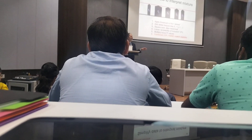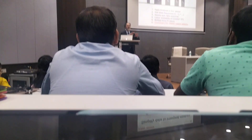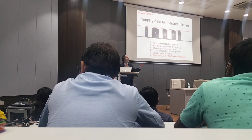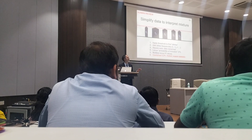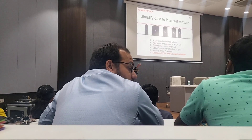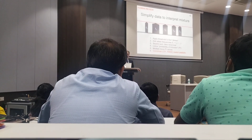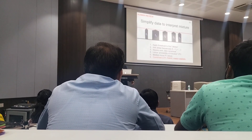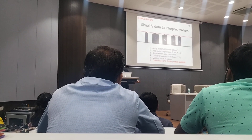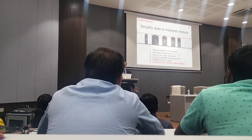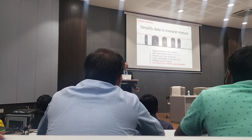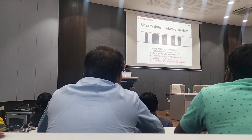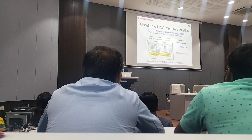The match statistic goes with simple interpretation — lists of alleles and thresholds. That's the information number that's used. In America and other countries, you cannot go to court without a match statistic. It's not admissible without one. You need to have some expression around it.